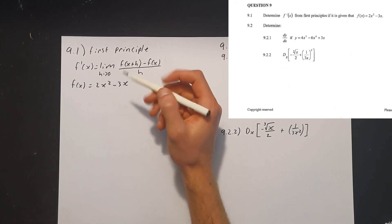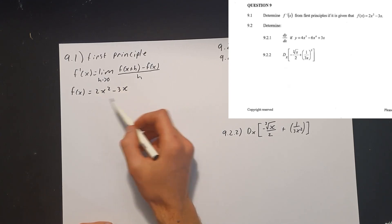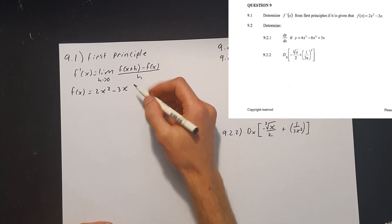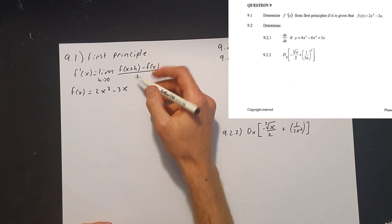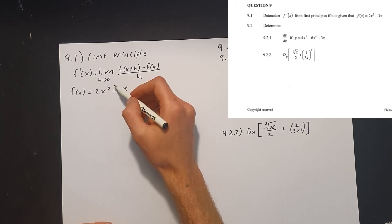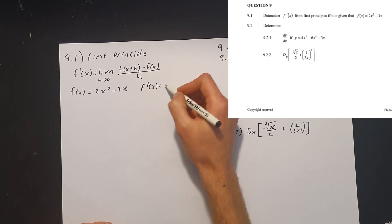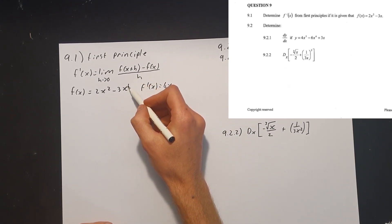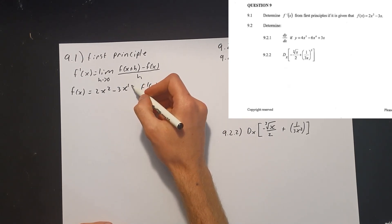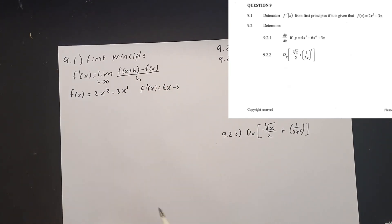Before I do first principles, I like to use the shortcut method to find the derivative first, so we know where we're heading. We can see that when we take the derivative, we take the exponent times by the front and minus one. So we're going to get f prime of x equals 4x. The power of 1 times negative 3 stays negative 3, and when we minus 1 off, this becomes x to the power of 0, which equals 1. So our derivative is 4x minus 3.